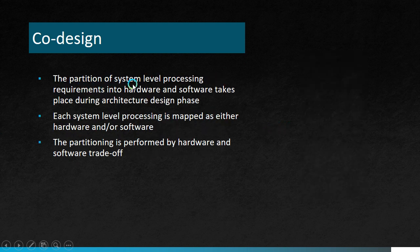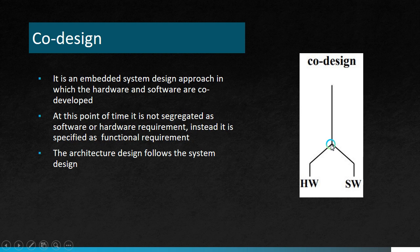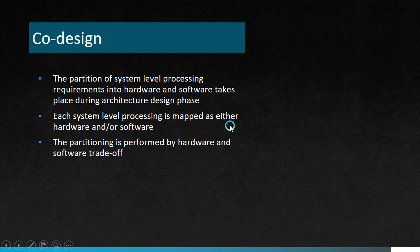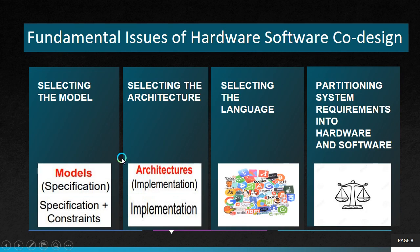The partition of system-level processing requirements into hardware and software takes place at the architecture design phase. In this phase, the system is split into hardware and software parts according to our functional requirements. Each system-level processing element is mapped as either hardware or software, and the partitioning is performed by hardware-software trade-off. This leads us to the important topic of today: the fundamental issues of hardware-software co-design.